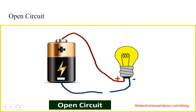This is an open circuit. An open circuit does not work. As you can see, the blue wire isn't connected properly, which means the electricity can't go to the light bulb and back to the negative terminal. A circuit that doesn't work is called an open circuit.